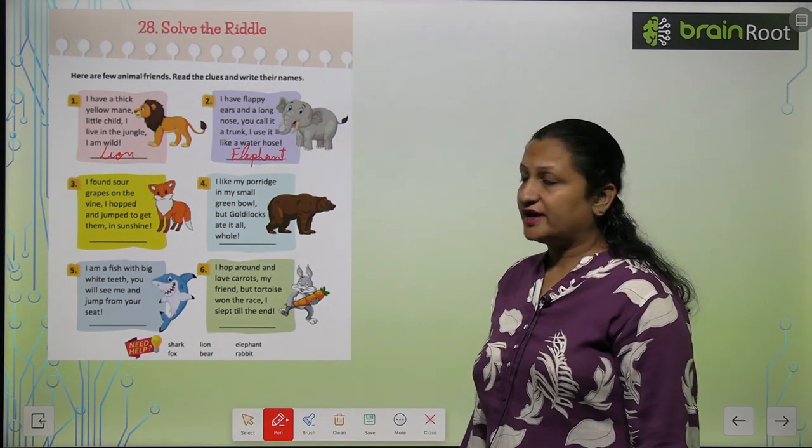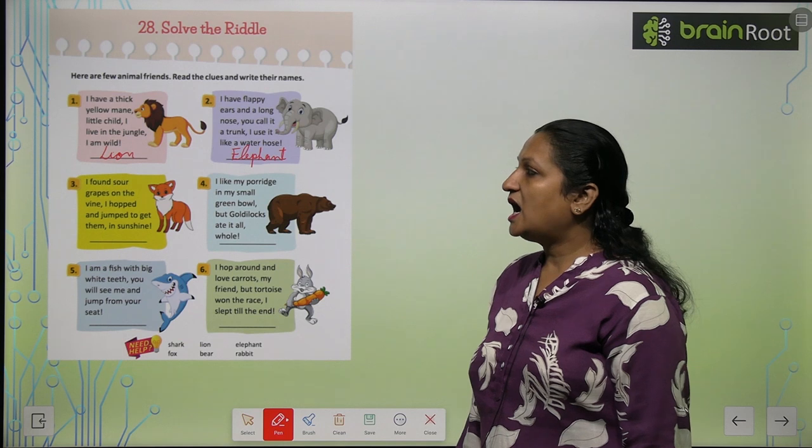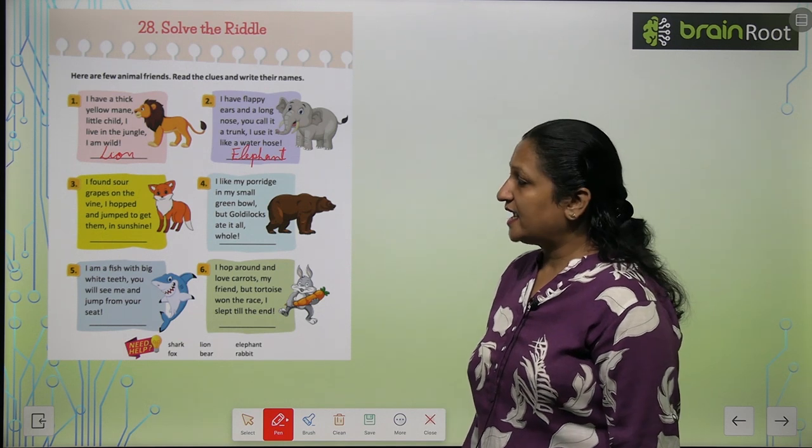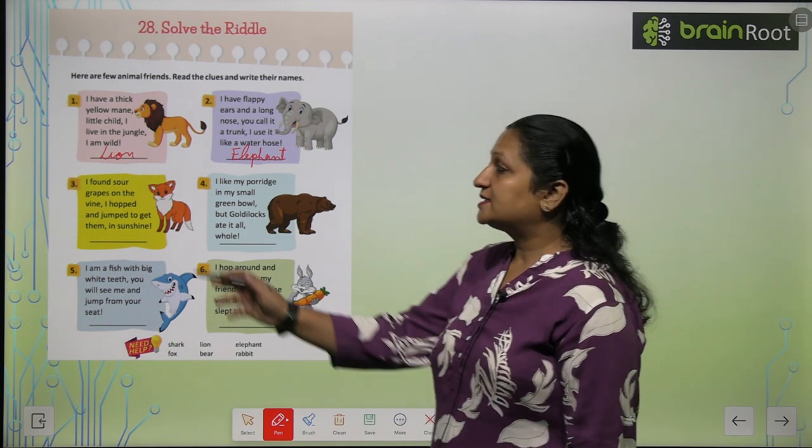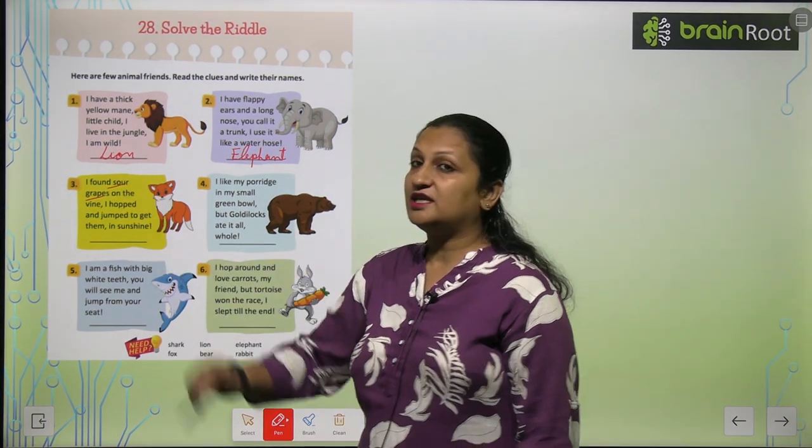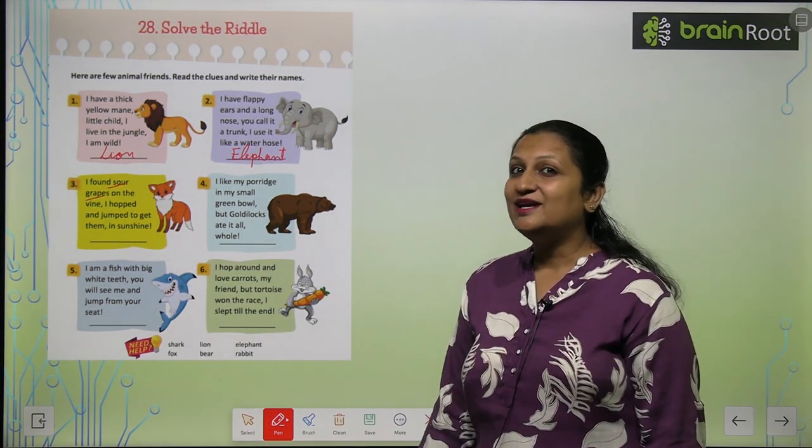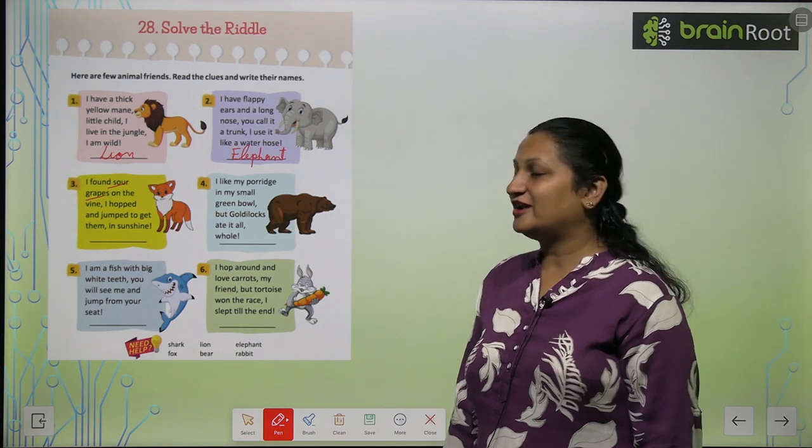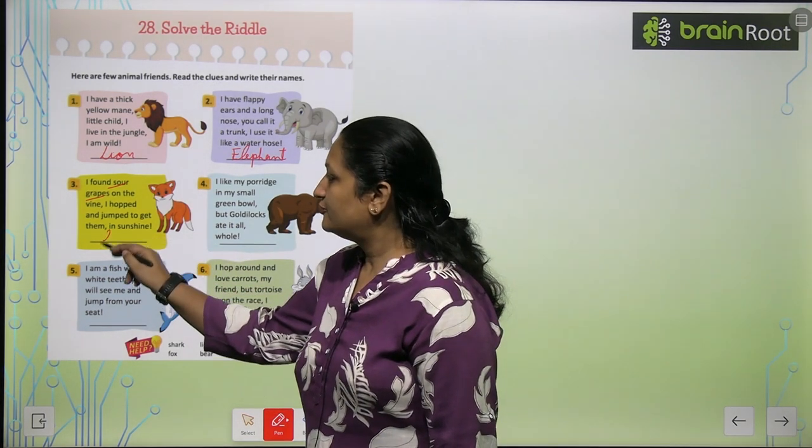I found sour grapes on the vine. I hopped and jumped to get them in sunshine. Toh kis ne grapes khane ki koshish kari thi? Ye toh bhot famous story hai. Kaunsi story hai? The fox and the sour grapes. So ye hai fox.